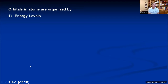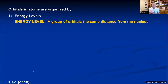The most basic and fundamental way to organize orbitals in an atom is by what energy level they're in. An energy level is almost like a Bohr orbit — first, second, third — but those orbits have different energies because they're different distances from the nucleus. So an energy level is a group of orbitals that have the same energy because they're the same average distance from the nucleus.